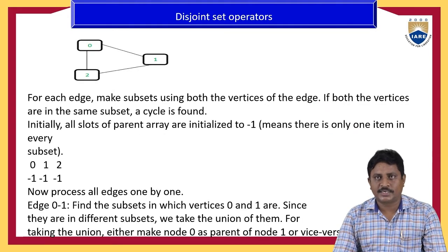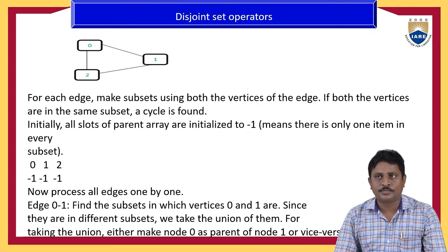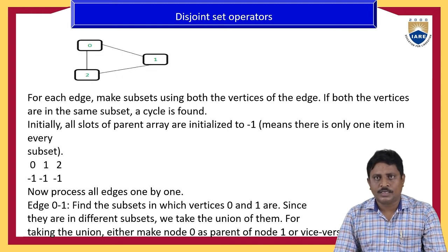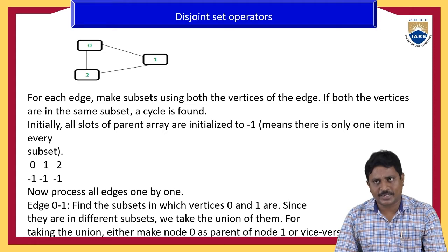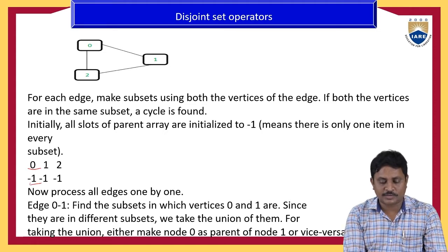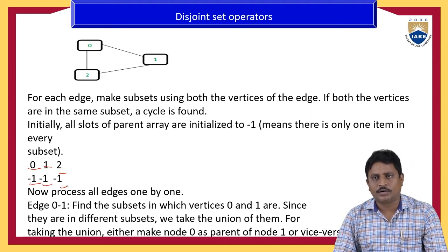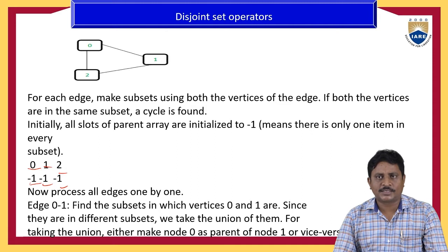Here we observe a given set consisting of three elements: zero, one, two. These vertices form a loop. Generally we initialize the parent node as minus one. So zero is a parent node, one is also a parent node, two is also a parent node. We represent all three nodes as: zero with minus one, one with minus one, two with minus one.